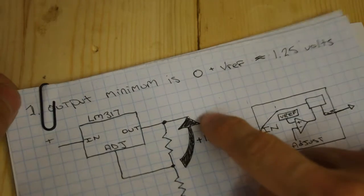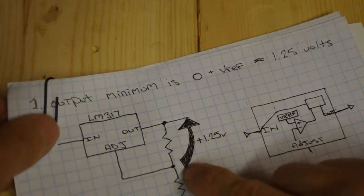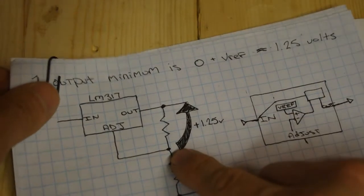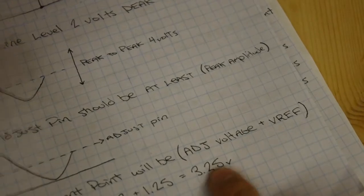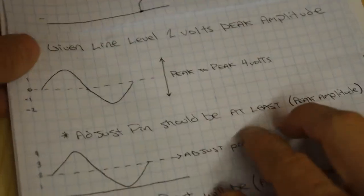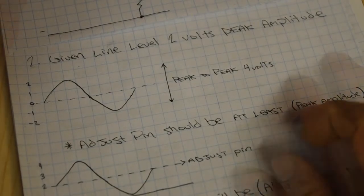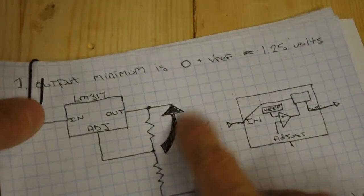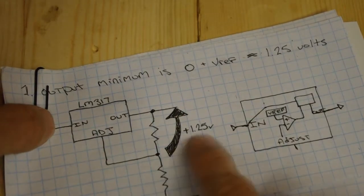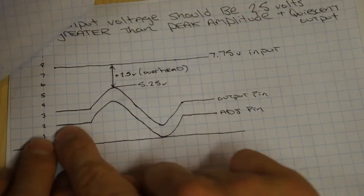Since my output pin is always going to lead the adjust pin by 1.25 volts, if I give the adjust pin 2 volts, which is my peak amplitude from the input signal, we're going to end up at 3.25 volts. That's actually going to be the quiescent point, and that's the point at which if there's no audio applied to the system, what you're going to be at your output. So in our case, we're going to be at 2 plus 1.25 volts, so we'll be at 3.25 volts.